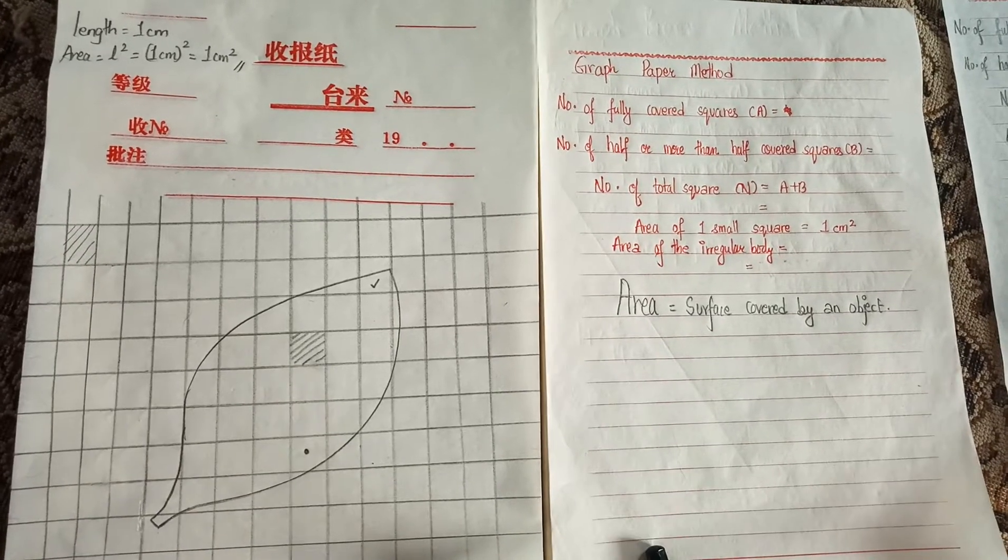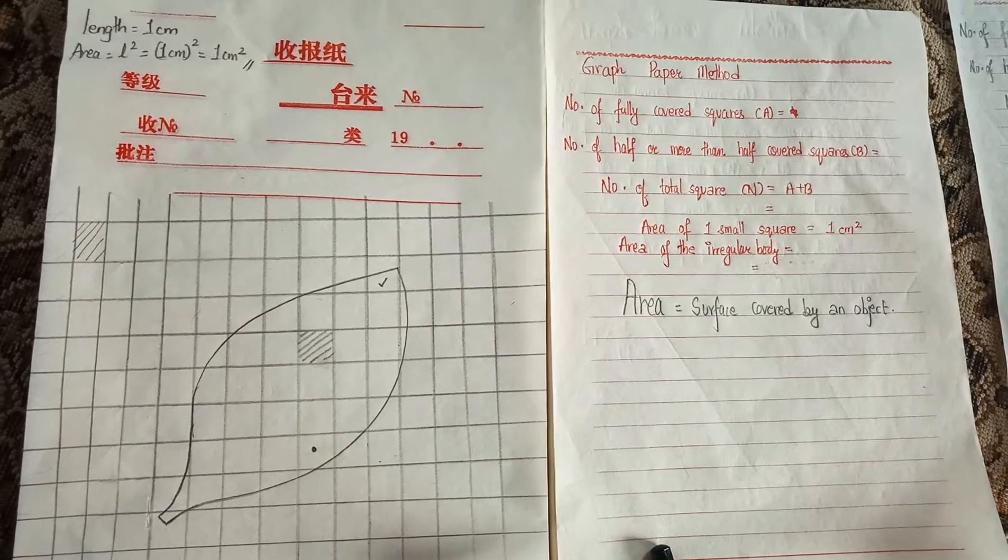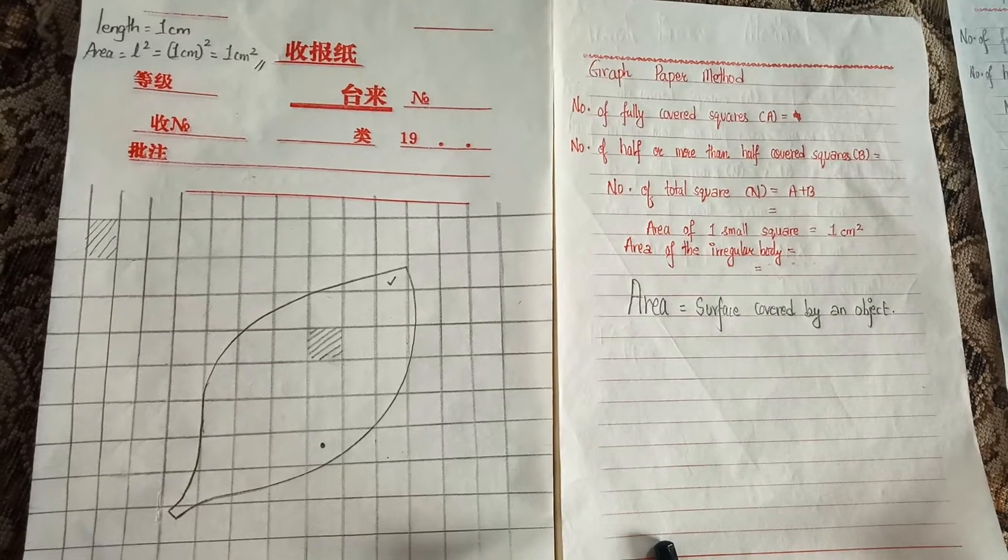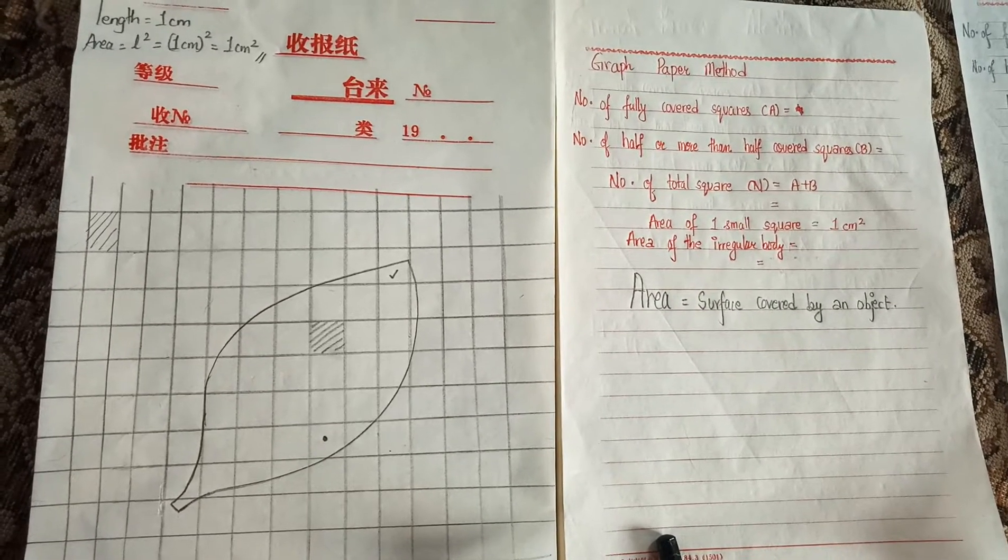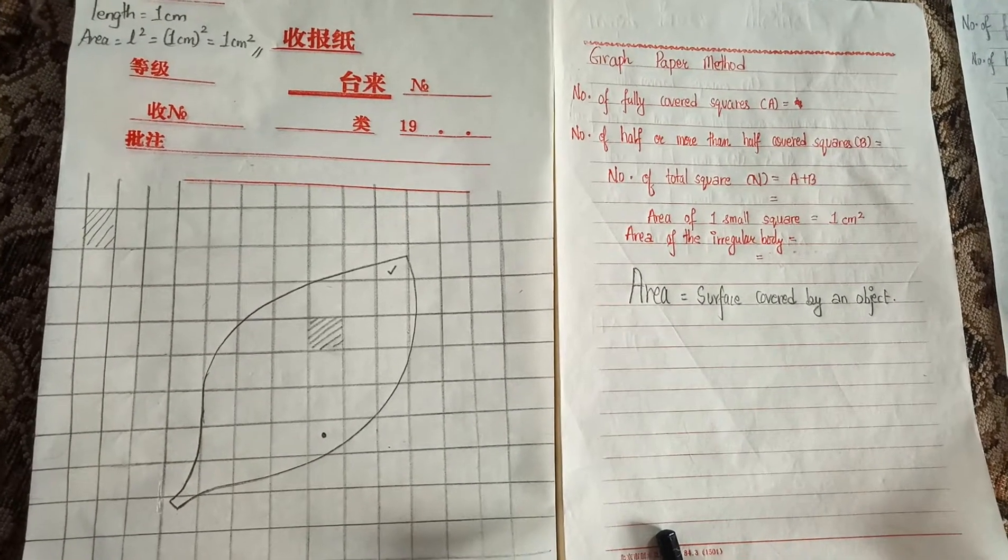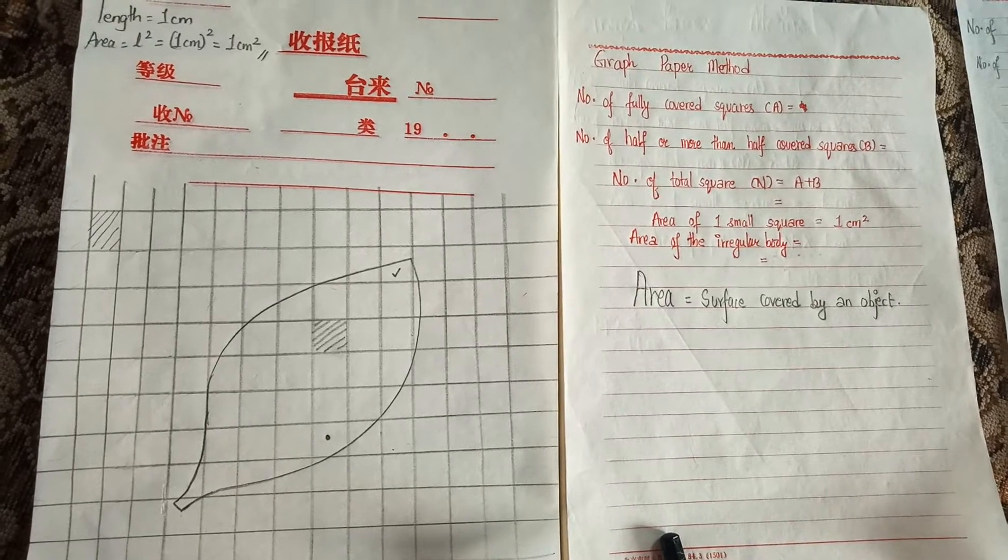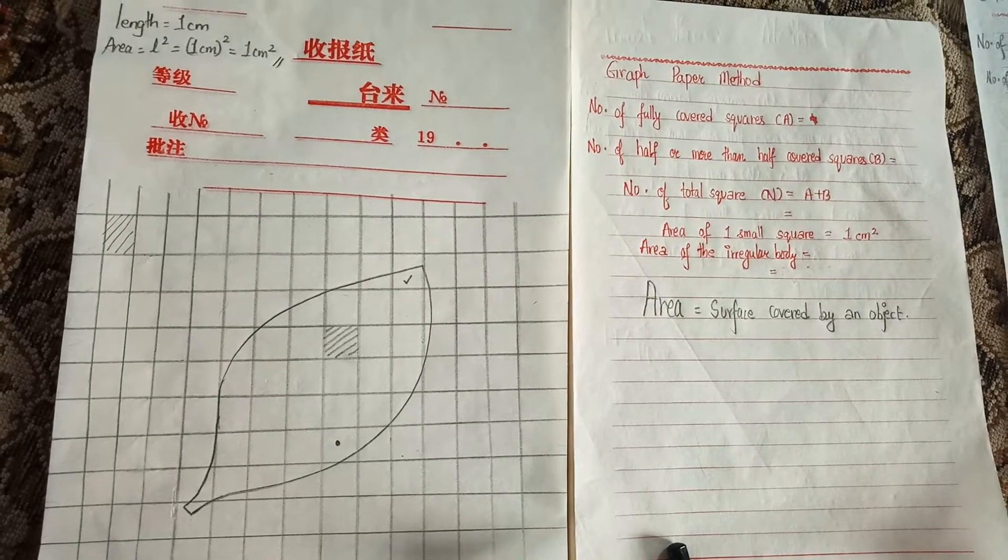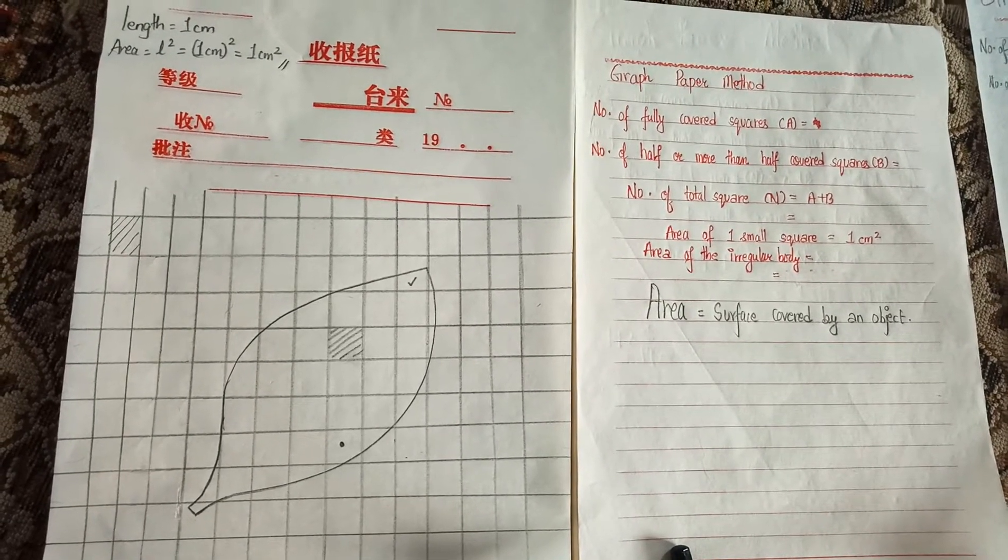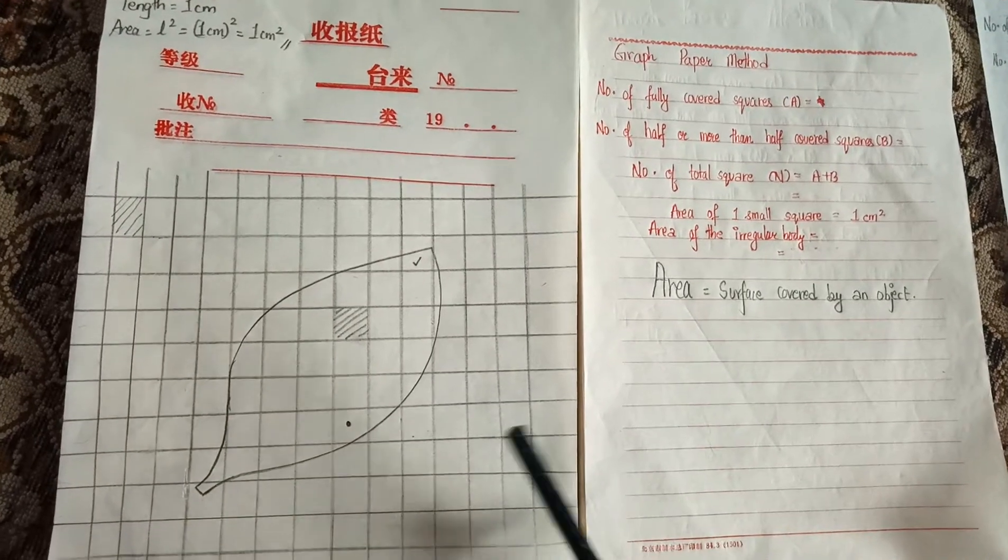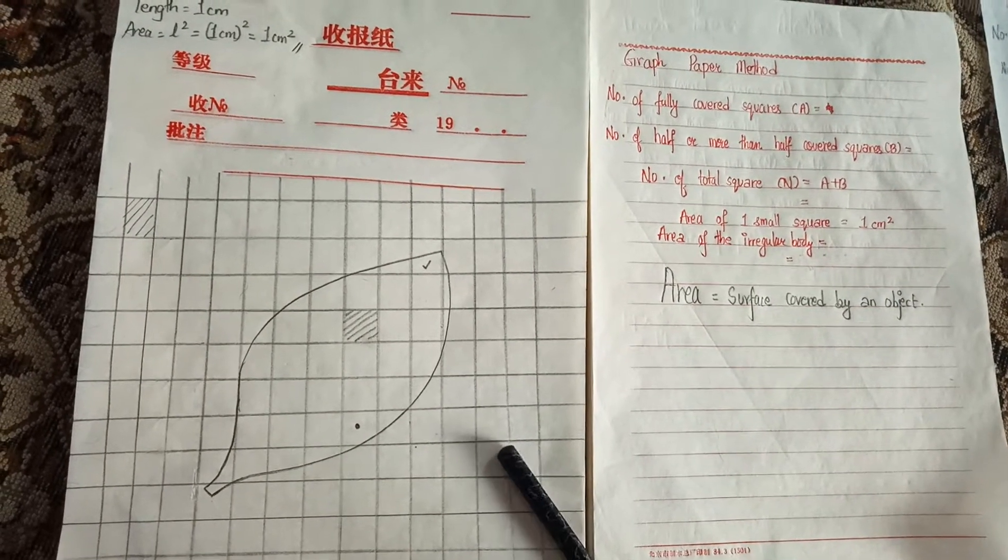In this video, we will be determining the area of a leaf. A leaf is an irregular body. The area of any irregular body can be determined with the help of graph paper.